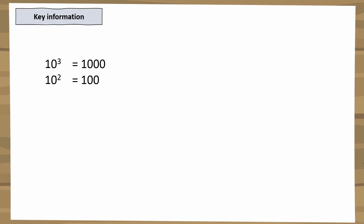10 to the power of 3 is a thousand, so 4,000 would be 4 times 10 to the power of 3. Every increase in a power of 10 means we increase the index by one, so 40,000 would be 4 times 10 to the power of 4. Even extremely large numbers with a string of 20 zeros can be written really quickly using times 10 to the power of whatever that number may be.